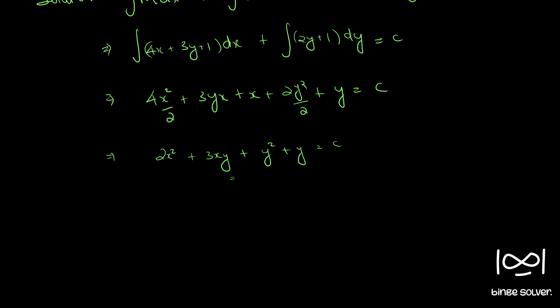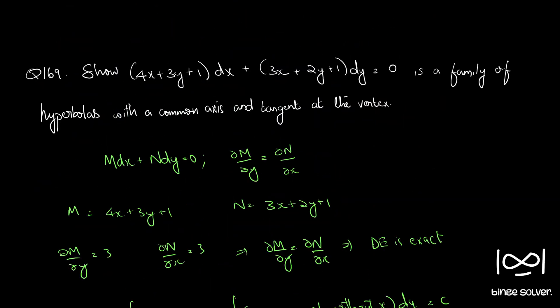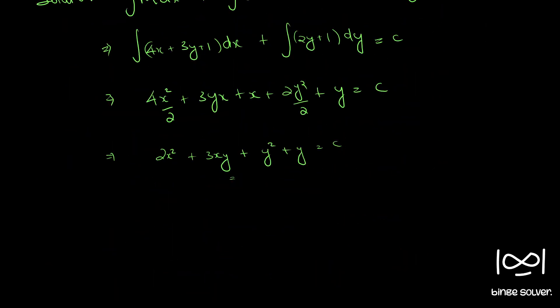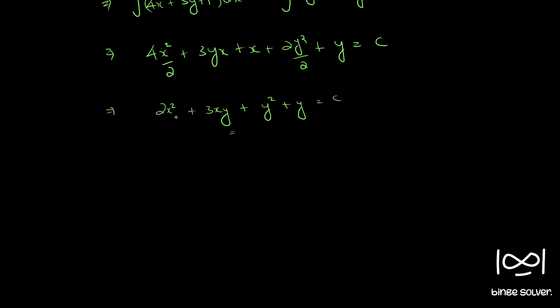Now the question asks whether the solution is a family of hyperbolas with a common axis and tangent at the vertex. We just have to check whether this equation represents a set of hyperbolas by comparing it with the general equation ax squared plus by squared plus hxy plus gx plus hy plus d equals 0.